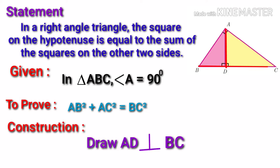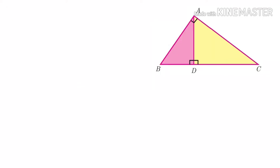To prove this, we have to construct AD perpendicular to BC. Let us see the proof. In this triangle, we have three triangles: two small triangles and one big triangle ABC.